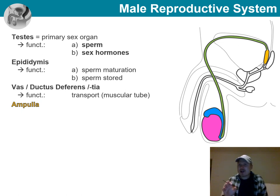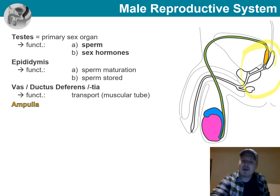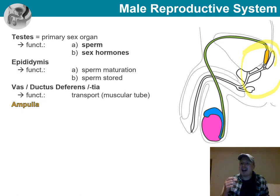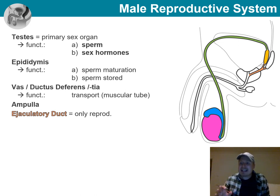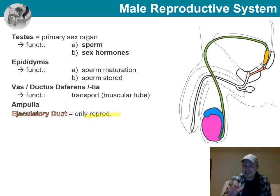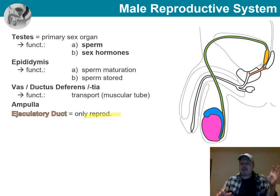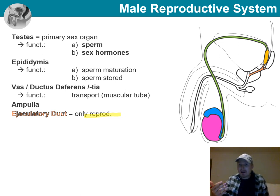Next, we have the ampulla — an interesting structure that is simply an enlargement of the vas deferens we just looked at; consider it a larger version of that same duct. Things then get interesting as the next part is the ejaculatory duct — the last segment of this tract dedicated solely to the reproductive system. After this, the remaining duct is shared with the urinary system, as the urinary bladder empties into it too.